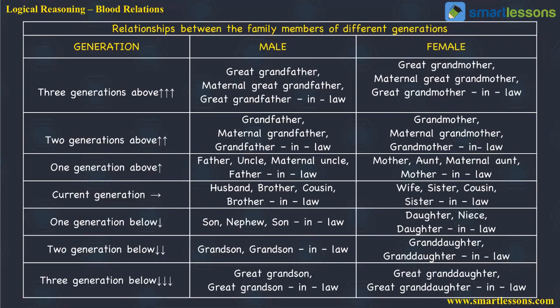If you are considering a female two generations above, it could be your grandmother (your father's mother), your maternal grandmother (your mother's mother), or your grandmother-in-law (your wife's grandmother). One generation above for a male could be your father, your uncle (your father's elder or younger brother), your maternal uncle (your mother's brother), or your father-in-law (your wife's father).